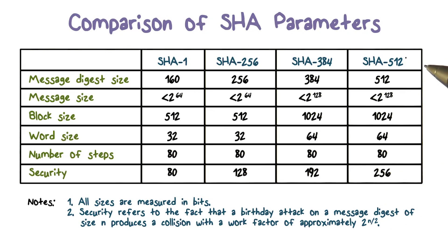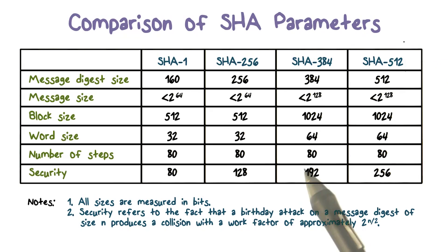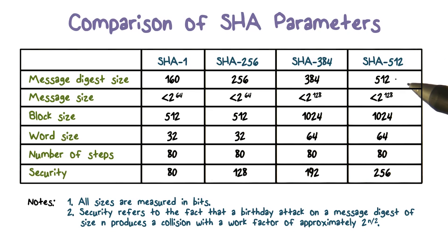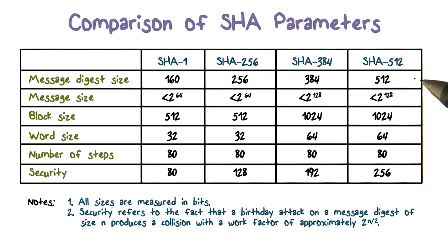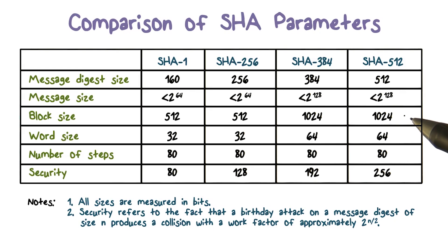In this lecture, we will provide a description of SHA512. The other versions are quite similar. For SHA512, it takes as input a message smaller than 2 to the 128 — again, not a limit that will have any impact in practice. The output is a hash value of 512 bits, and the input is processed block by block, where each block has 1024 bits.